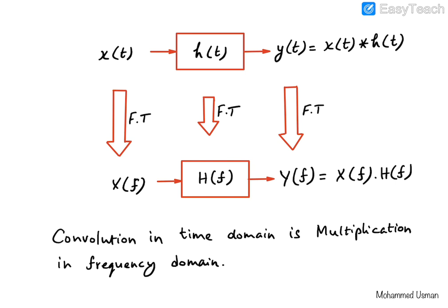These relationships were presented for the continuous time case. Similar relationships apply for the discrete time case as well, except that the version of the Fourier transform applicable to discrete time systems and signals is called the Discrete Time Fourier Transform, or DTFT.